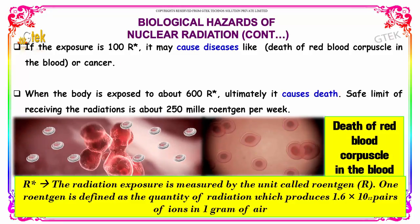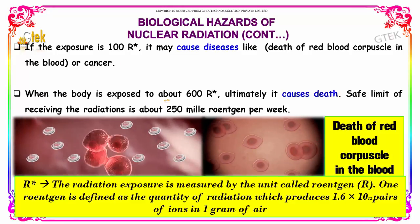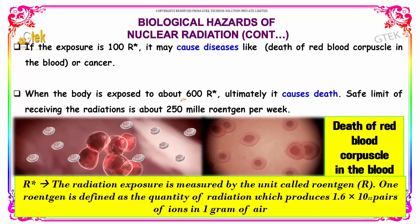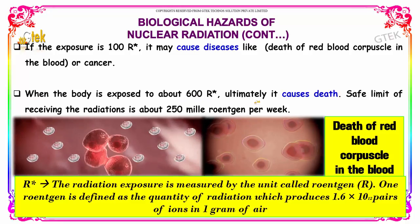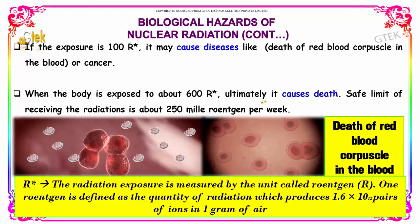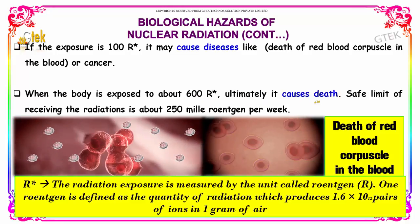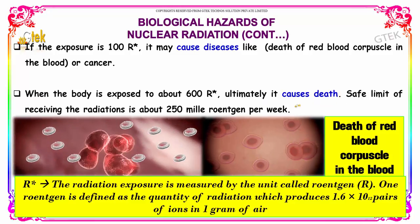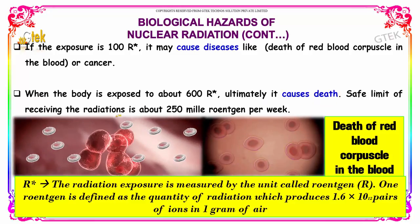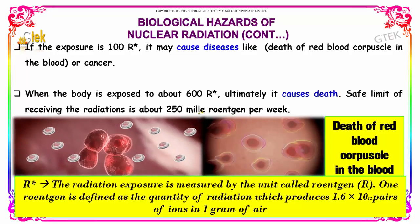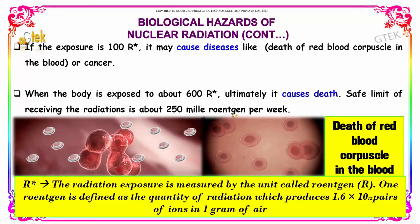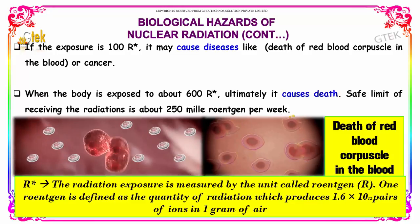When the body is exposed to about 600 roentgens, ultimately the person will die — it causes death. The safe limit for receiving radiation is about 250 milli-roentgens per week.